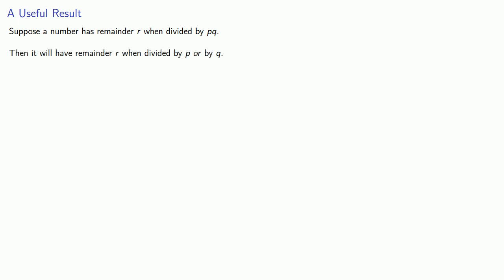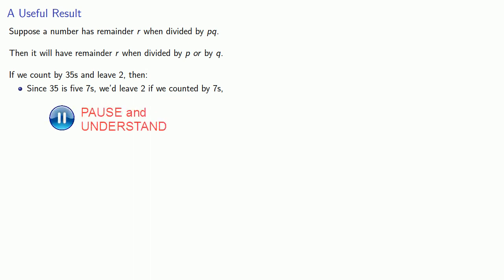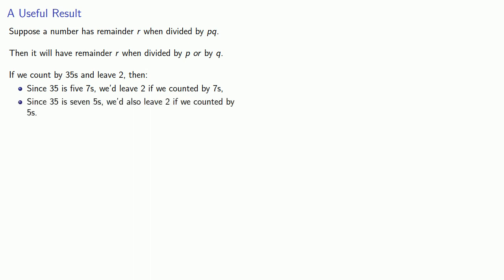Here's a useful result. Suppose a number has a remainder R when divided by P times Q. Then that number will have remainder R when divided by P or by Q. For example, if we count by 35s and leave 2, then since 35 is 5 sevens, we'd leave 2 if we counted by 7s. And since 35 is 7 fives, we'd also leave 2 if we counted by 5s.